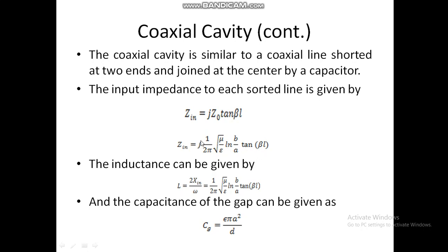This is an imaginary term, so there are only inductive terms and no resistive terms. The quantity (1 / 2π) × √(μ/ε) × ln(b/a) × tan(βl) is inductive, so we can say it equals Xin. Therefore, inductance L can be calculated as L = 2Xin / ω.